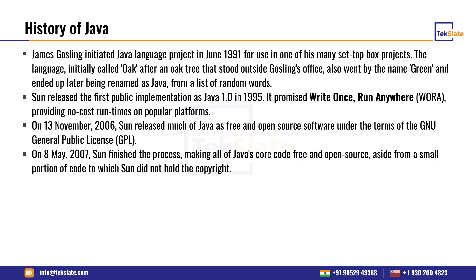James Gosling was the first person who started Java in 1991. He initiated the Java language project in June 1991 for use in one of his set-top box projects. The language was initially called Oak, after an oak tree that stood outside Gosling's office, also went by the name Green, and was later renamed Java. Sun released the first public implementation as Java 1.0 in 1995, promising write once and run anywhere. On 13th November 2006, Sun released much of Java as free and open source software under the terms of the GNU General Public License. On 8th May 2007, Sun finished making all of Java's core code free and open source.